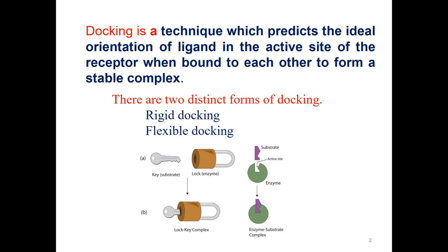There are two different types of docking: rigid docking and flexible docking. A simple example for docking is the lock and key method. Here the lock is considered as the receptor or protein, and the key is considered as the ligand. When the key is inserted in the lock, it performs some action and the lock is opened or unlocked. The locking and unlocking is based on what type of key is inserted — similar to enzyme-substrate interaction in enzymology.